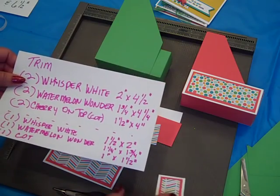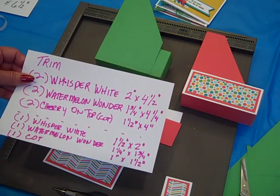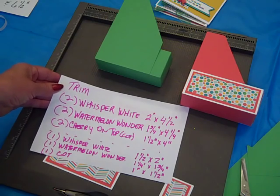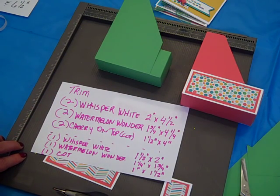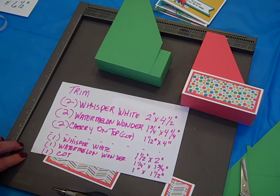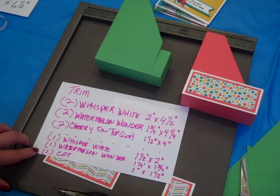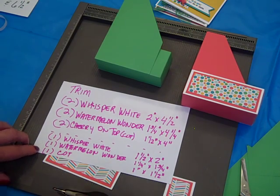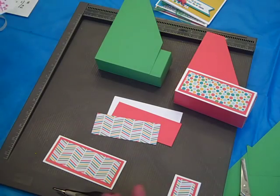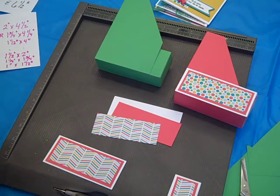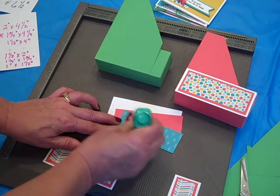And then we need just one set for the end. A whisper white of 1½ x 2, the watermelon wonder 1¼ x 1¾, and the cherry on top 1 x 1½. Such little pieces but it makes such a big difference.